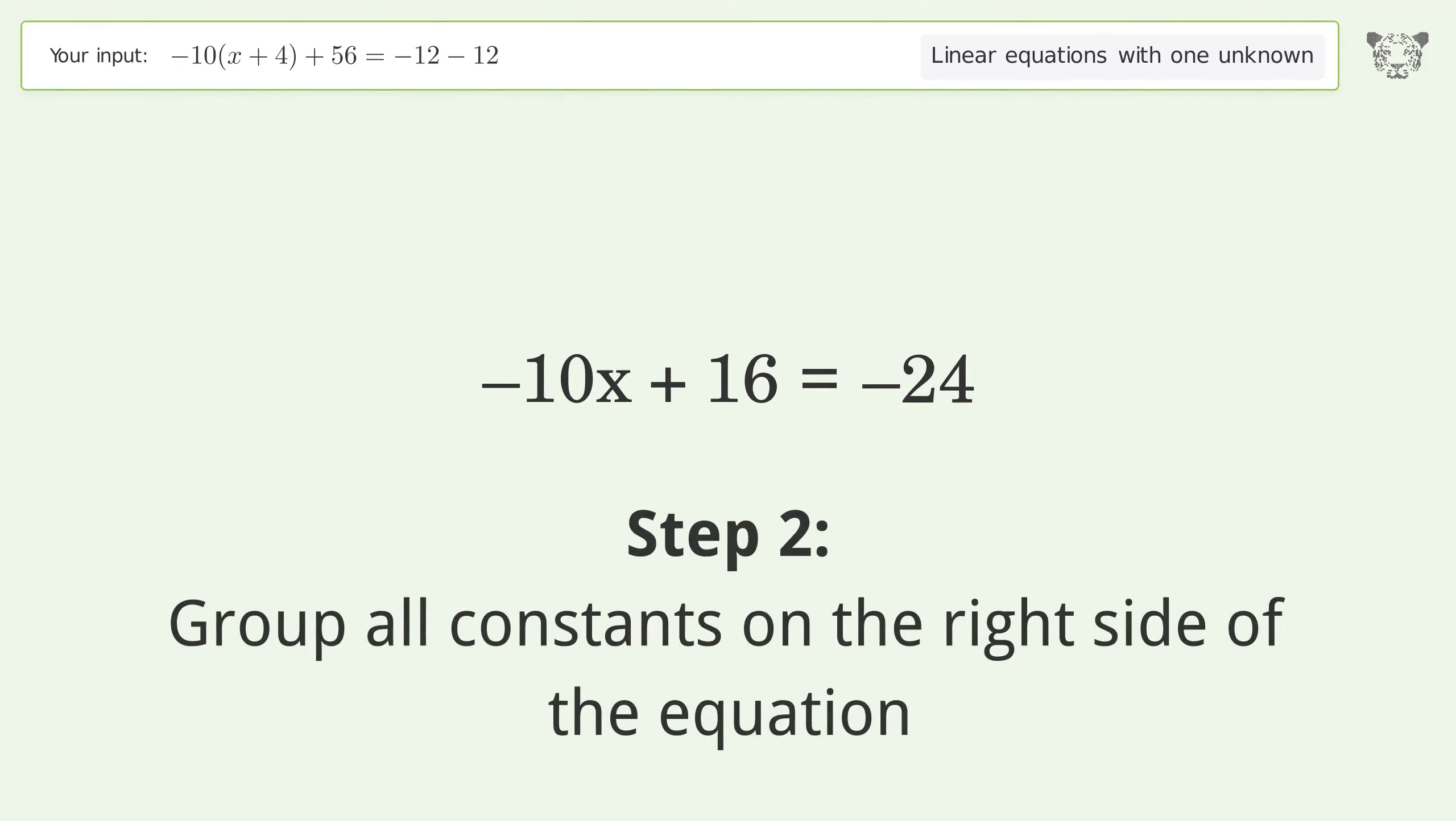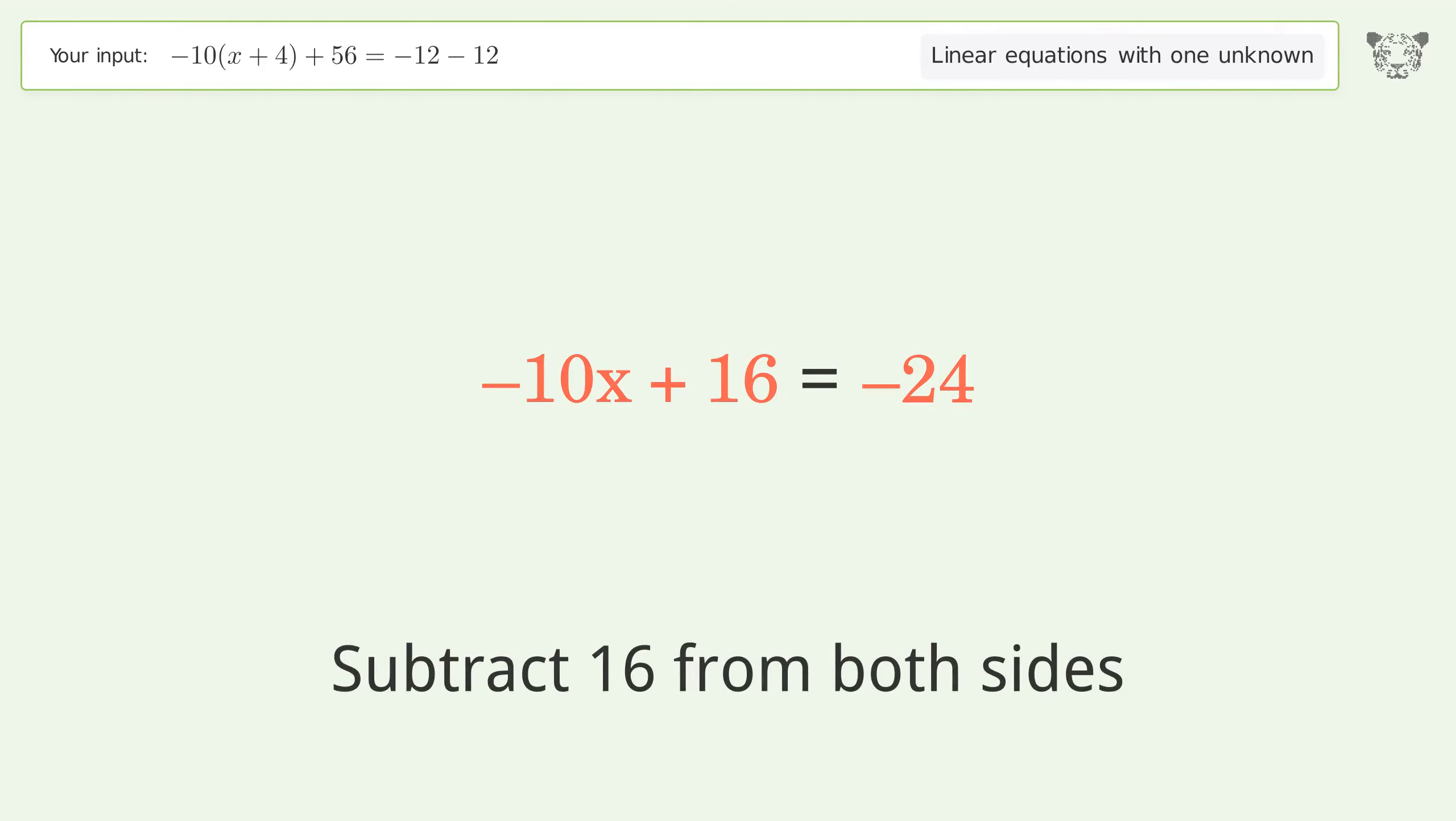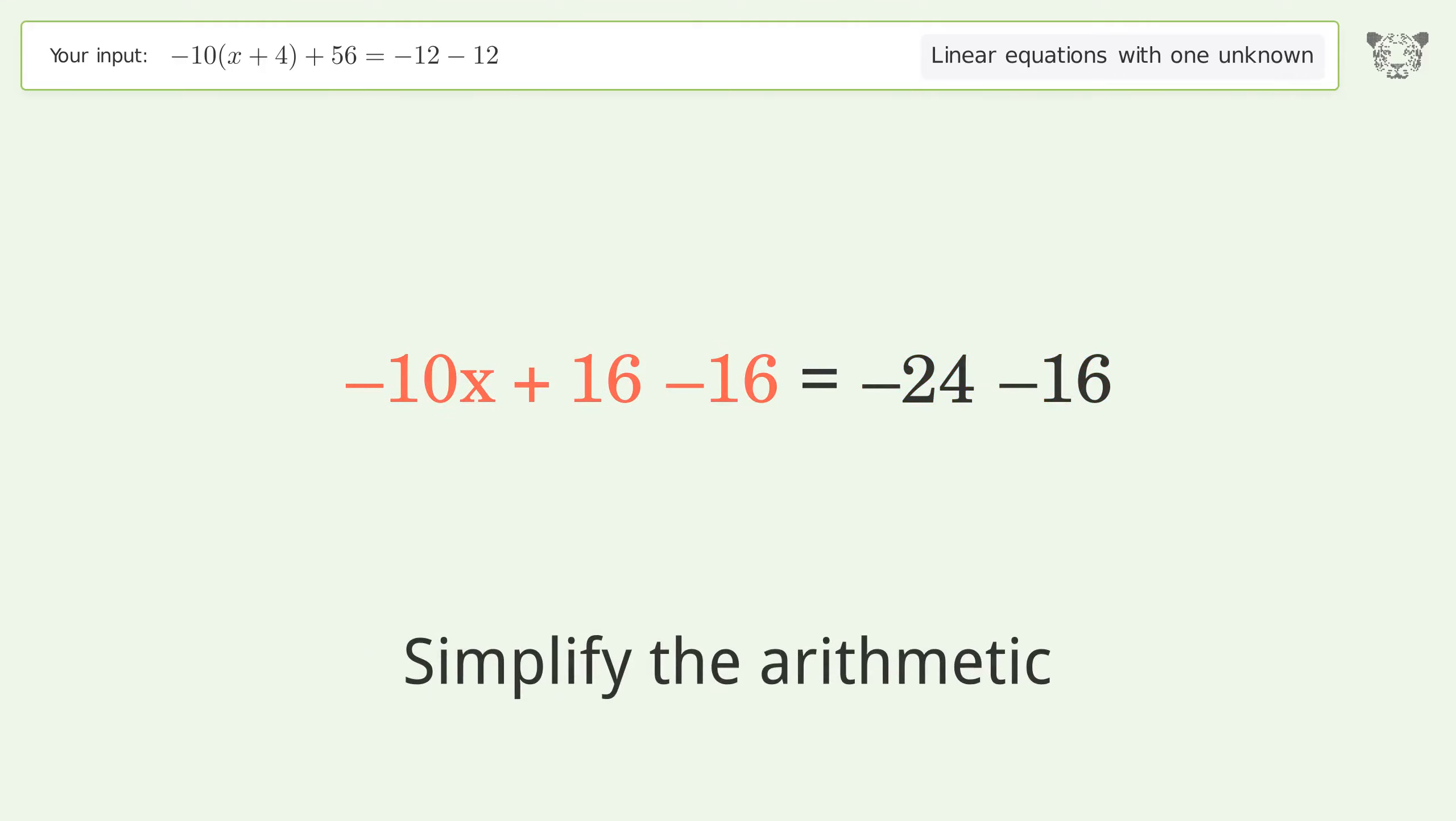Group all constants on the right side of the equation. Subtract 16 from both sides. Simplify the arithmetic.